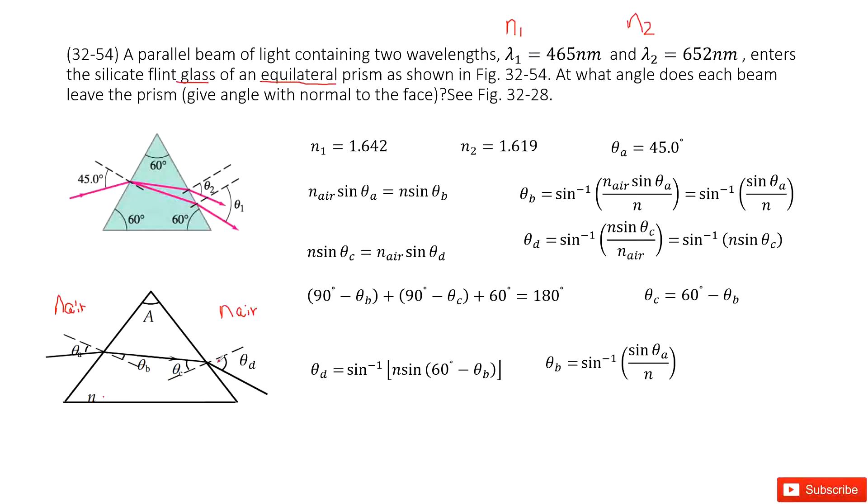And now we need to find theta d. We can know theta a, theta b, theta c, theta d. How can we do that? So write down Snell's equation. We can know nL sine theta a equals n sine theta b.